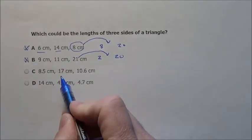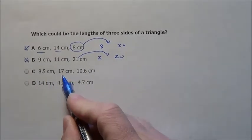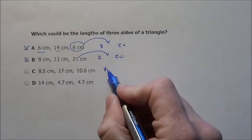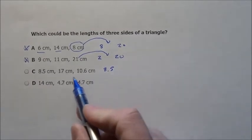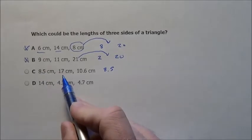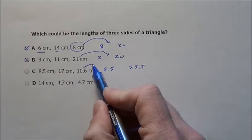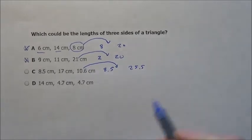Let's take the next one. 17 minus 8.5 is 8.5, and 8.5 plus 17 is 25.5. Does 10.6 fit between there? Yes it does.